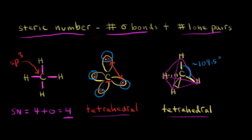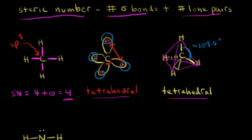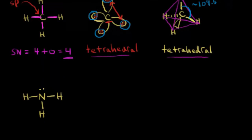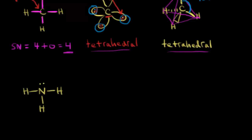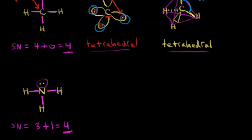Let's do the same type of analysis for ammonia, NH3. The steric number is equal to the number of sigma bonds — one, two, three — so three sigma bonds, plus the number of lone pairs of electrons. There is one lone pair of electrons, so three plus one gives a steric number of four. I need four hybridized orbitals, so this nitrogen must be sp3 hybridized, because sp3 hybridization gives us four hybrid orbitals.